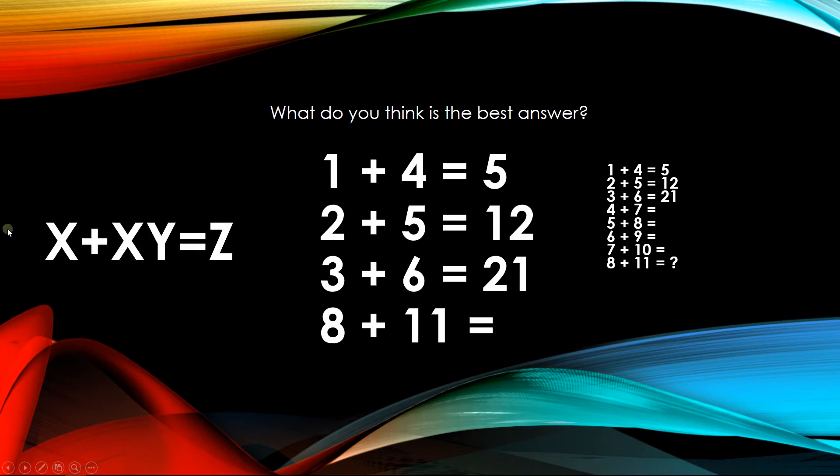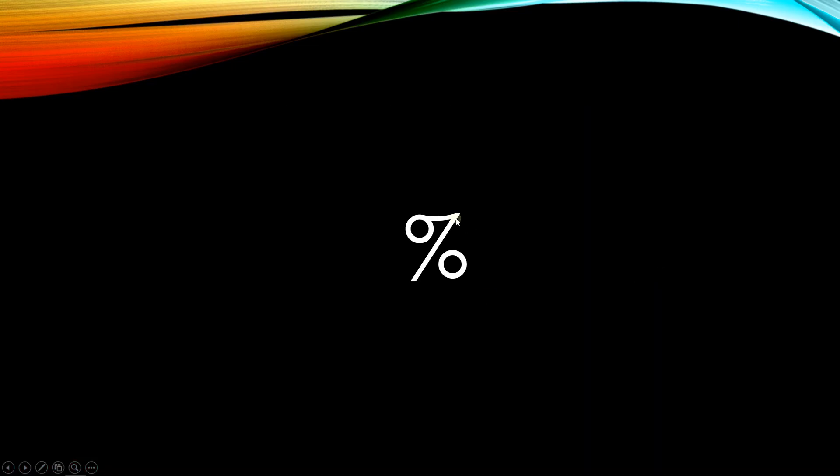And a different formula to answer this question is using this. So if you apply this formula where this is x and this is y and this is z, x plus x times y, 8 plus 88 equals 96. That's the best answer.